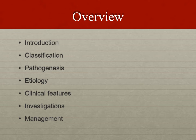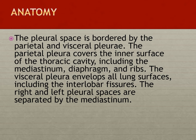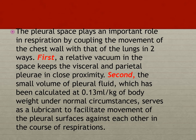The pleural space is bounded on the outer side by the parietal pleura and on the inner side by the visceral pleura. The space between the parietal and the visceral pleura actually makes the pleural space. This space plays an important role in respiration by coupling the movement of the chest wall with the lungs.